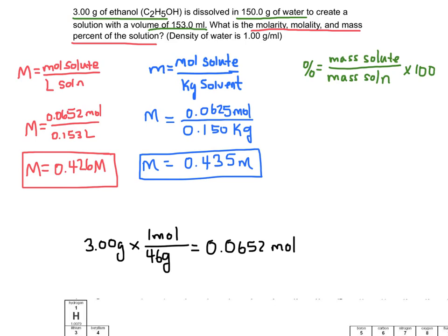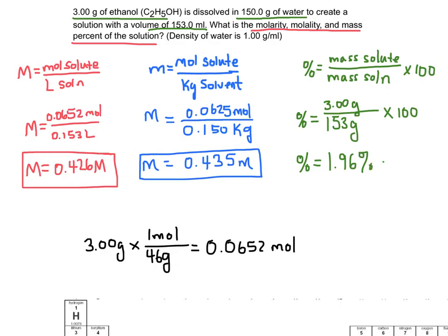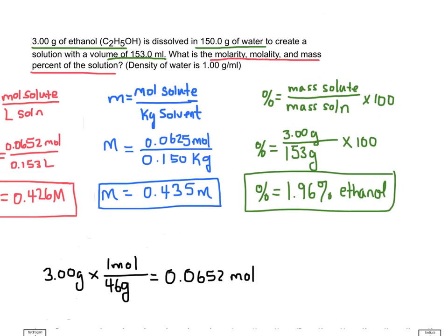Finally, the mass percent of the solution. We need the mass of the solute and the mass of the entire solution. The solute is 3 grams of ethanol. The mass of the solution is 3 grams of ethanol plus 150 grams of water, which equals 153 grams. Multiplying 3/153 by 100 gives a mass percent of 1.96% ethanol. And so there are molarity, molality, and percent solution.